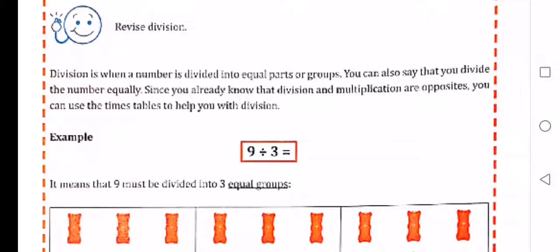Revise division. Division is when a number is divided into equal parts or groups. You can also say that you divide the number equally. Since you already know that division and multiplication are opposites, you can use the times table to help you with division.